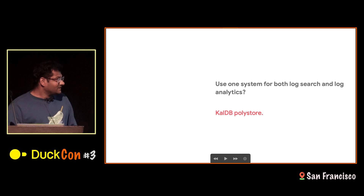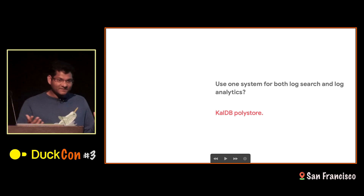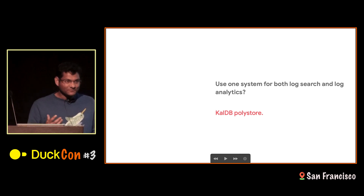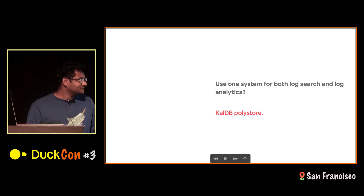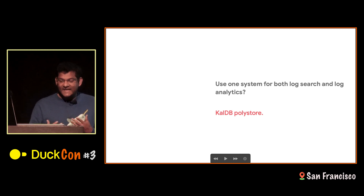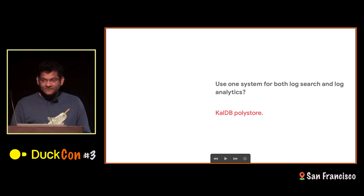So the insight is very simple: can I use one system for both search and analytics instead of using two? So the idea is CalDB Polystore.